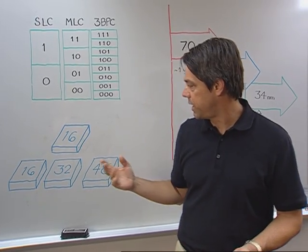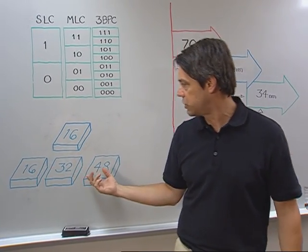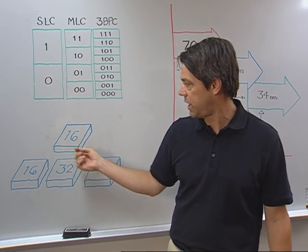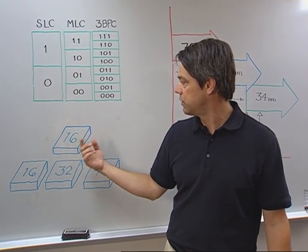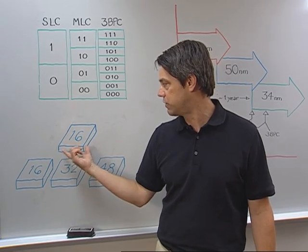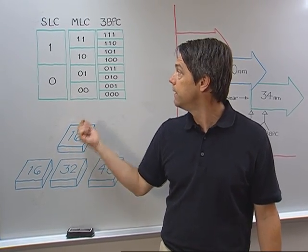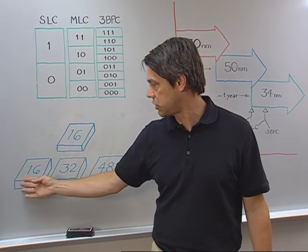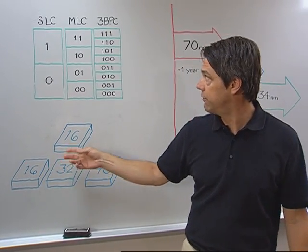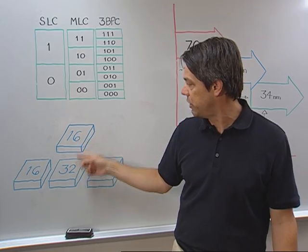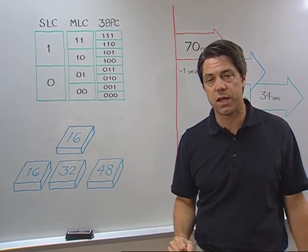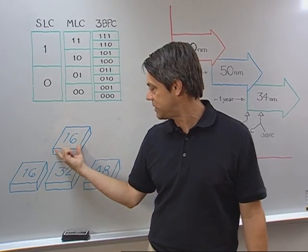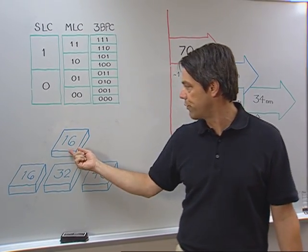So to be able to build these various densities that the consumer would buy, we have a physical NAND array. In this example, it's 16 gigabits. So if the physical array or the number of cells is 16 gigabits, and we're storing one bit per cell, the end product is also 16 gigabits. If we're storing two bits per cell for MLC, the end product is 32 gigabits. And if we took that same 16 gigabit array, that same die, and we're able to store three bits per cell, we would have a 48 gigabit product.